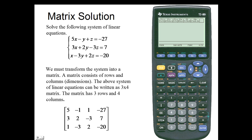When we transform our system into a matrix, we'll simply write out the rows according to the coefficients from our equations. For example, we can interpret this first row as the first equation in our system: 5x minus y plus z equals negative 27. We can interpret the last two equations in the same manner.